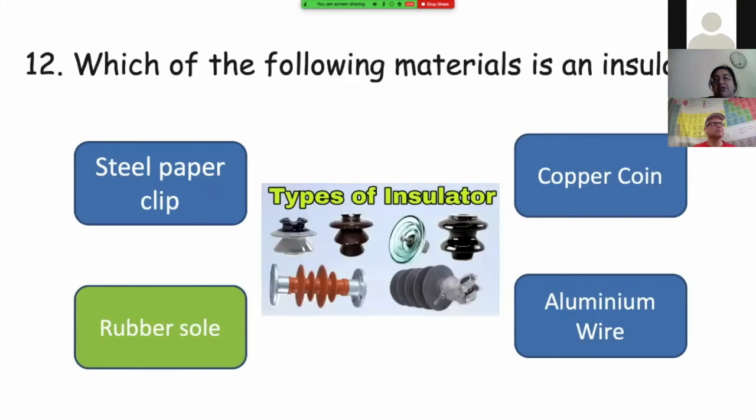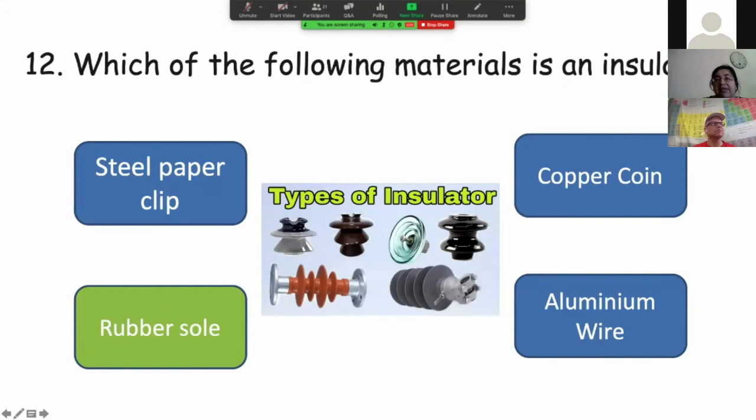Insulator. Insulator is a material that does not pass the electricity. So a steel paper clip can pass the electricity. Copper coin, yes, it can pass electricity. Aluminum wire can pass electricity. The only thing is rubber sole. It is an insulator.